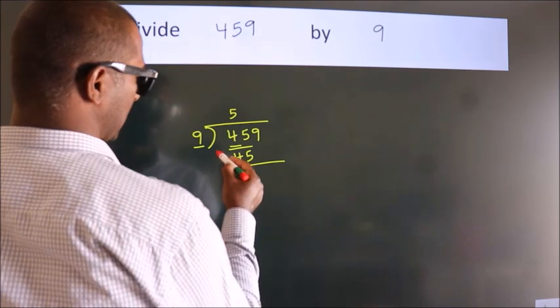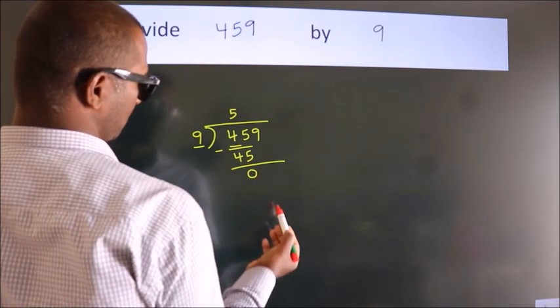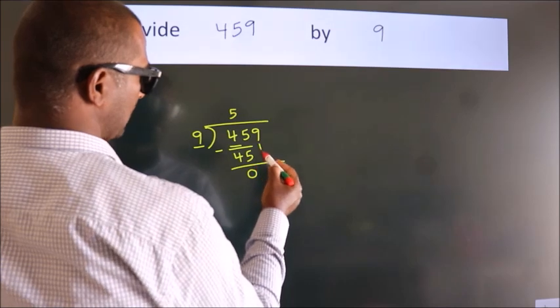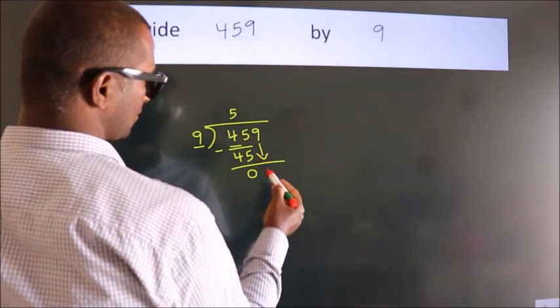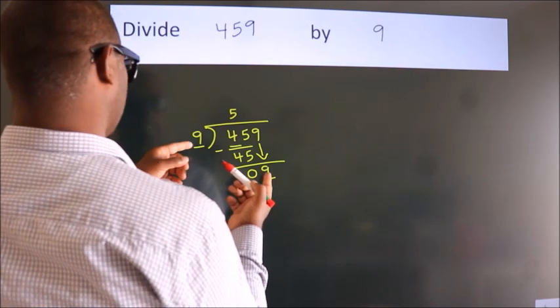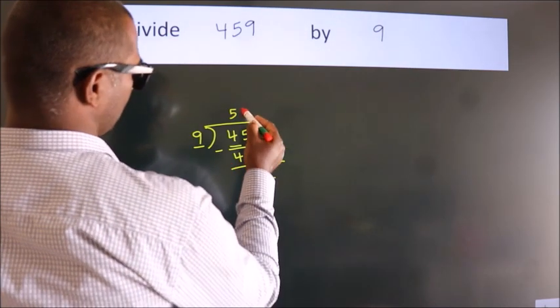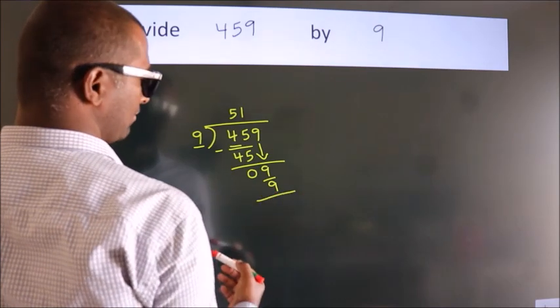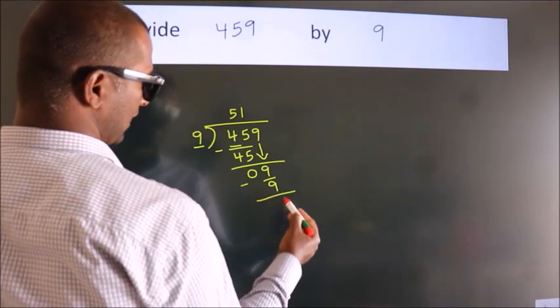Now we should subtract. We get zero. After this, bring down the next number, so 9 down. When do we get 9 in the 9 table? 9 ones are 9. Now we subtract, we get zero.